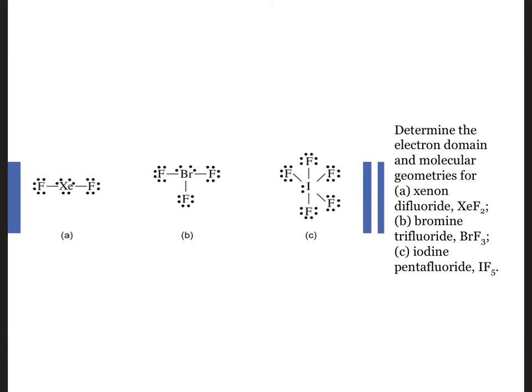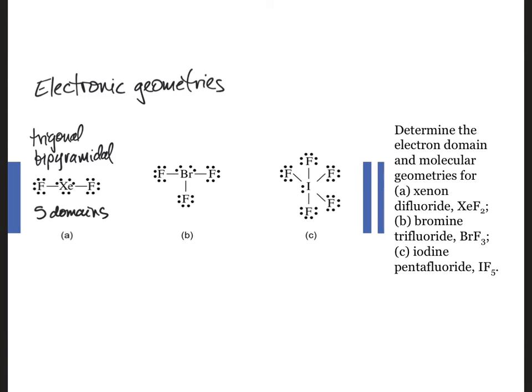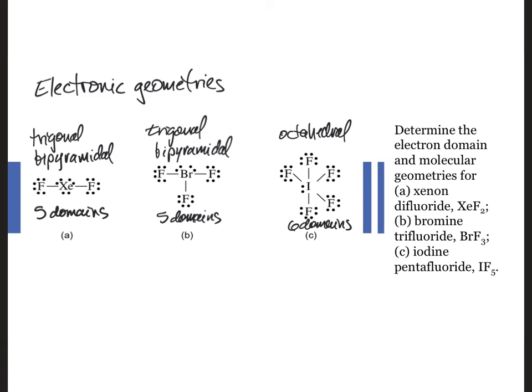Find the electronic and molecular geometries for the following three molecules. Xenon difluoride has five electron domains on the central atom, so it has a trigonal bipyramidal electron geometry. Bromine trifluoride also has five groups and a trigonal bipyramidal structure. Iodine pentafluoride has six electron domains around the central atom, so it has an octahedral electron geometry.